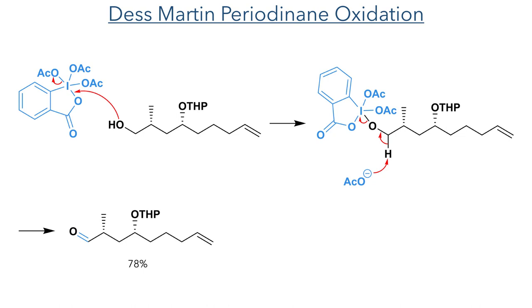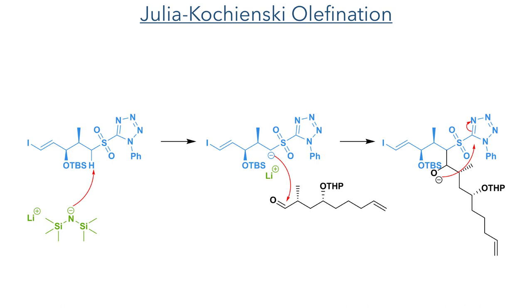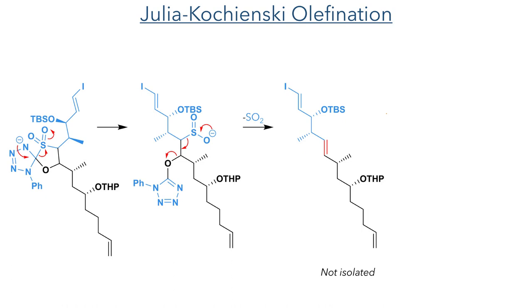This aldehyde was needed for the Julia-Kocienski olefination. A tetrazole sulfone was first deprotonated by lithium HMDS, and this then added to the aldehyde. The alkoxide formed by this addition then reacts intramolecularly and adds to the tetrazole, producing a tetrazaspiro intermediate. This then fragments, causing migration of the tetrazole to the oxygen atom together with the formation of a sulfonate. This can eliminate along with the tetrazole, producing an alkene primarily as the E-isomer, resulting from the anti-orientation of the sulfonate and the tetrazole subunit during the elimination.